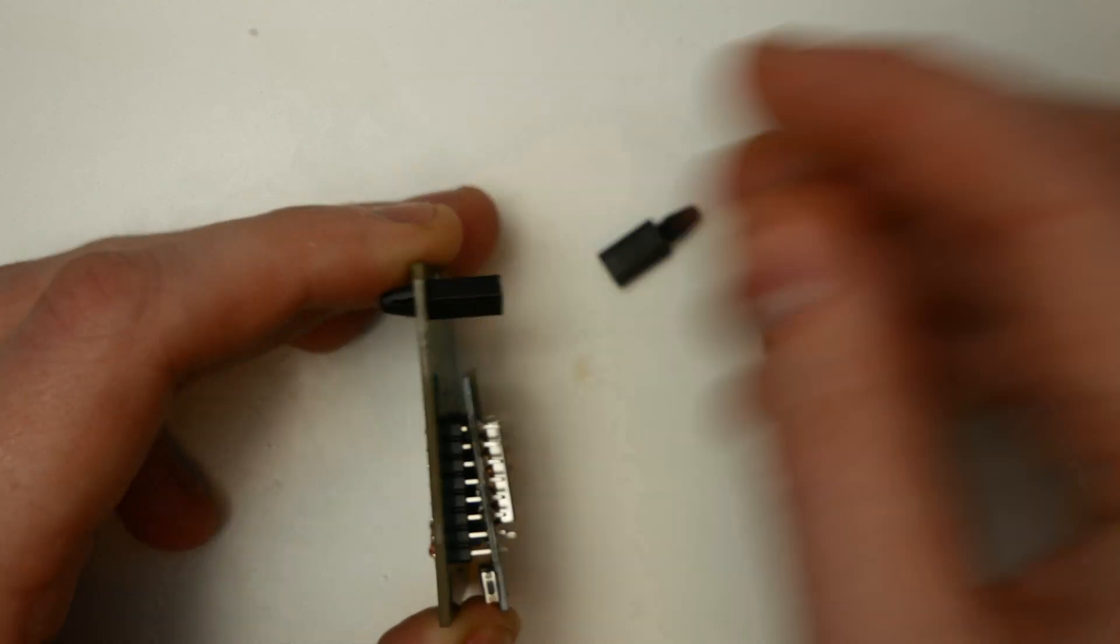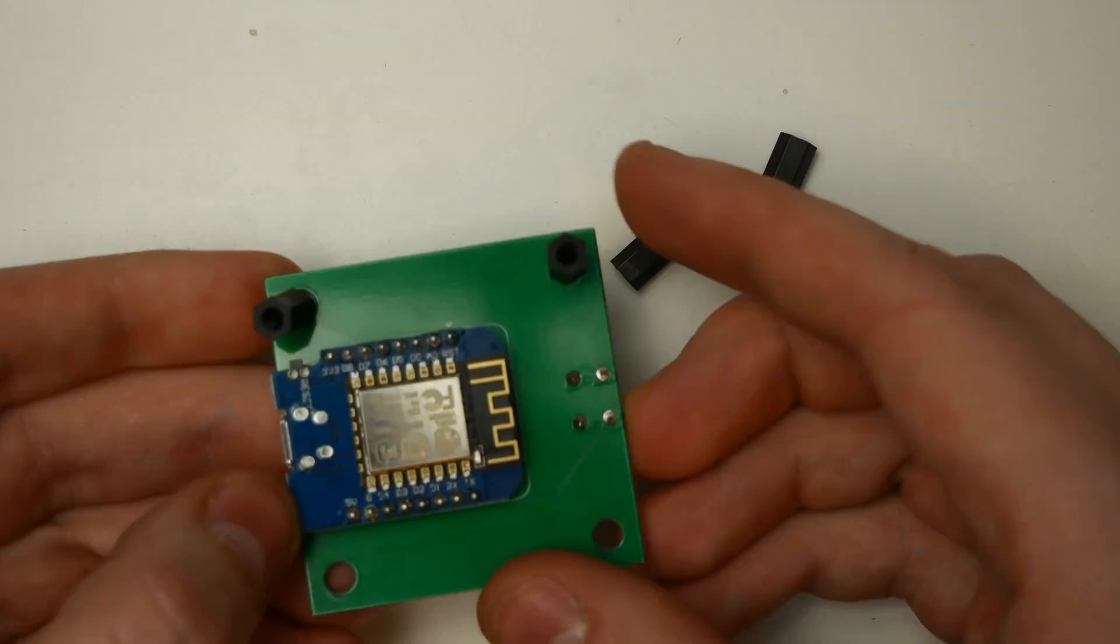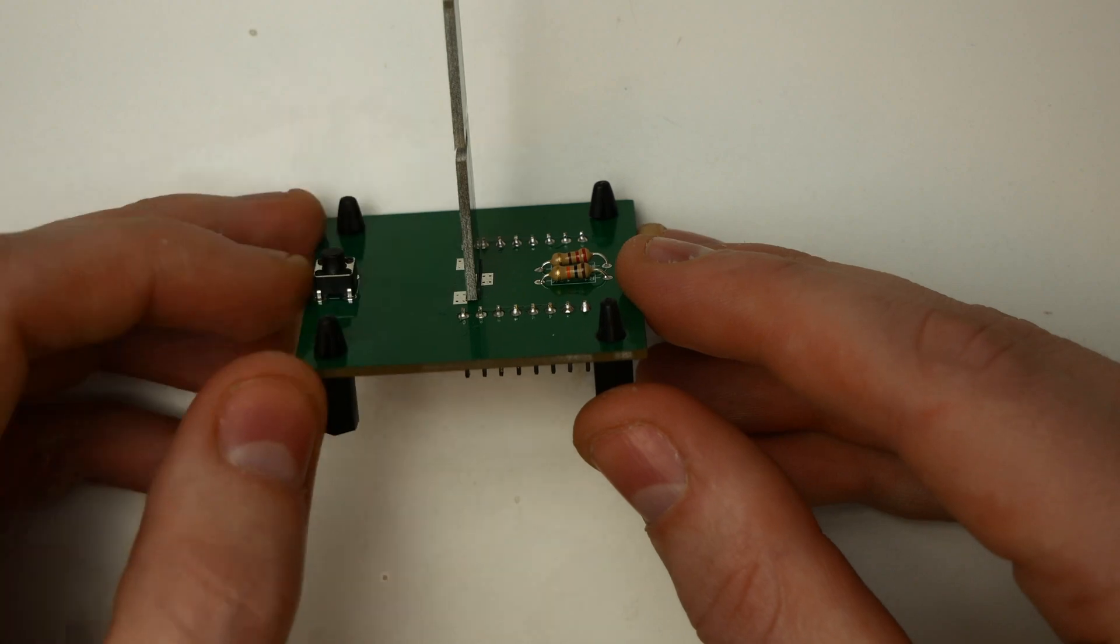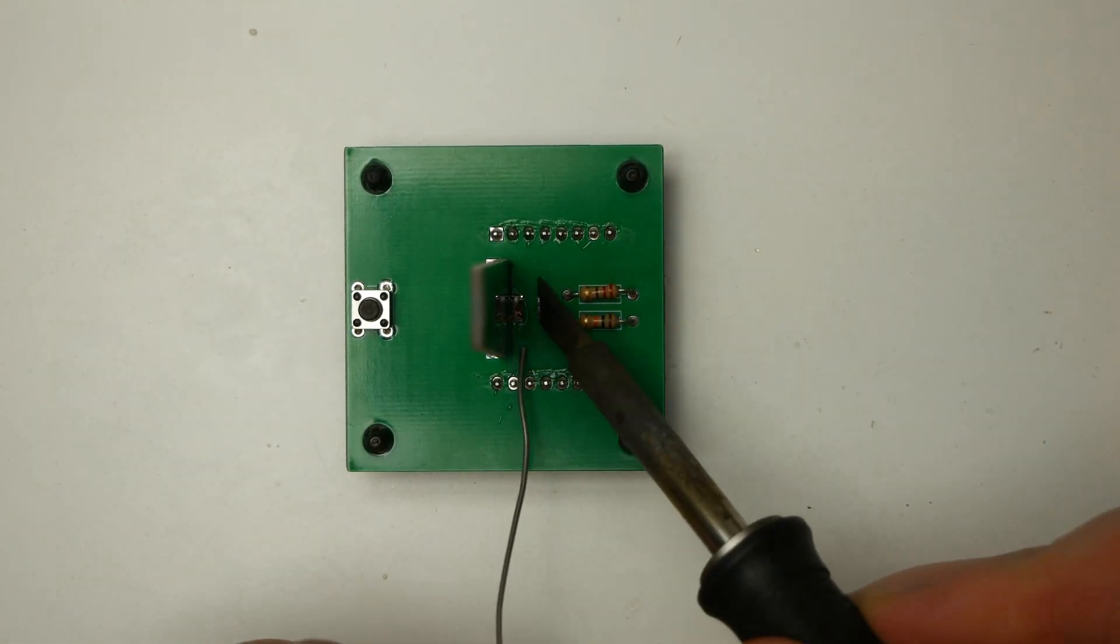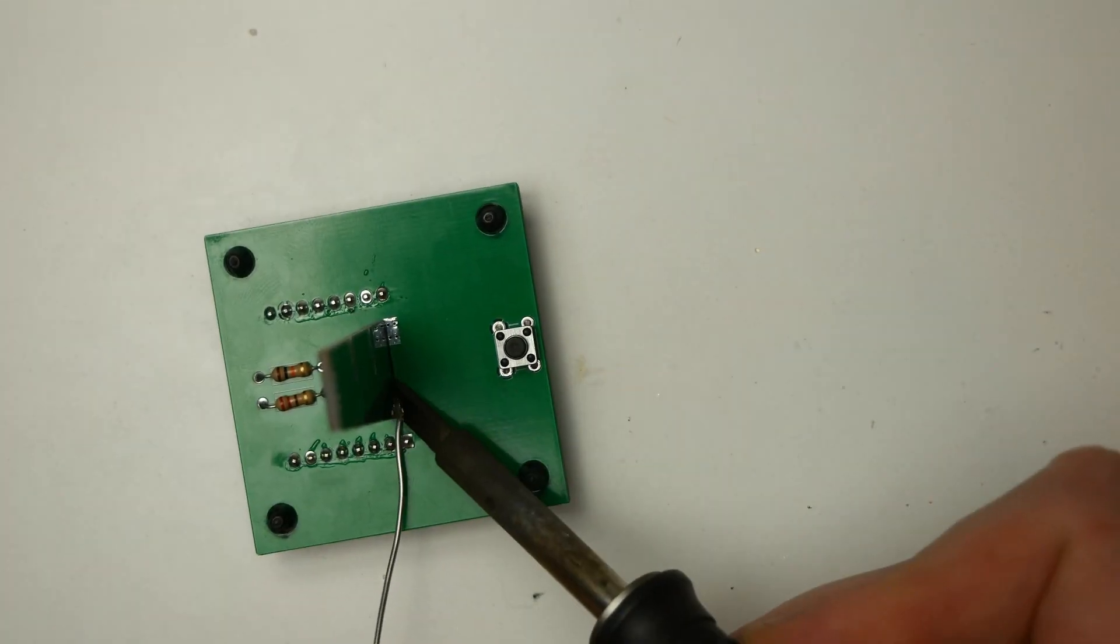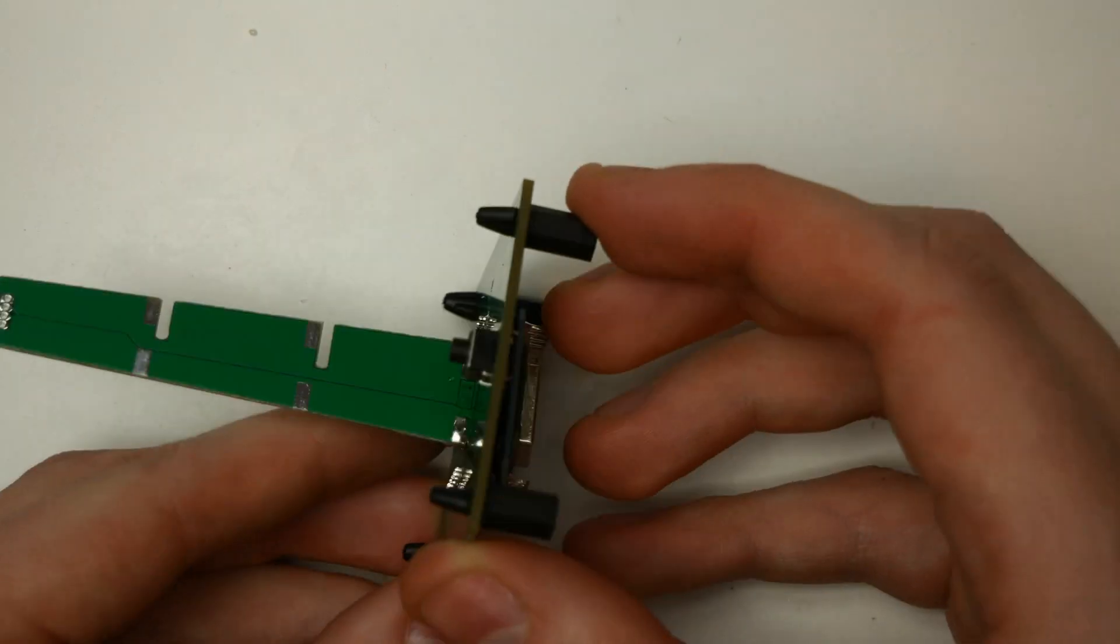Next insert spacers into the baseboard from below. Now the tree trunk can be soldered. Insert the tree trunk into the slot in the baseboard. Make sure that the soldering points are next to each other and that it is straight.